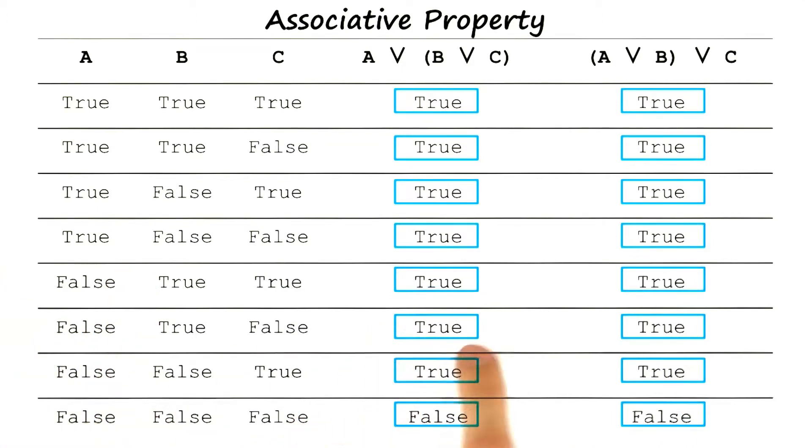When B is true, we know it's already true. And then if B is false, we need to look at C. If C is true, then it's still true. And if C is false, then all three are false, and that's the only time it's false.